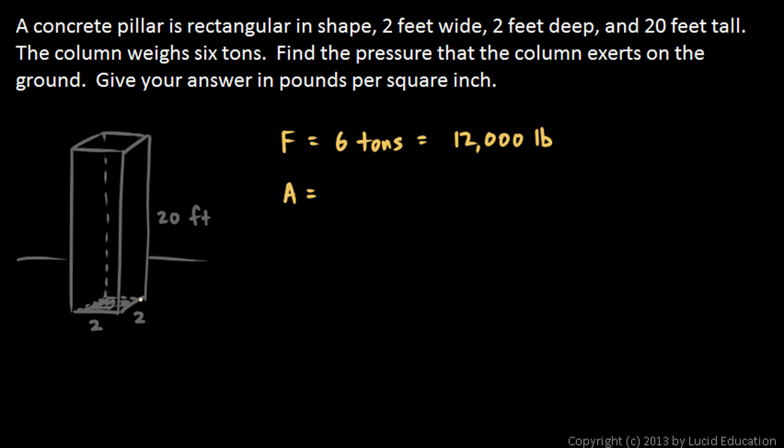And the area here, now the area is two feet by two feet, but we're told to give the answer in pounds per square inch. So we need to convert that. Two feet is 24 inches. So this is 24 inches by 24 inches. And when you multiply 24 by 24, you get a big number. It's 576 inches squared, or square inches.